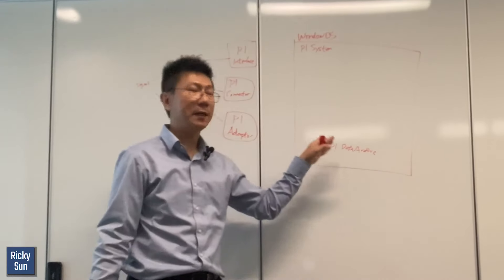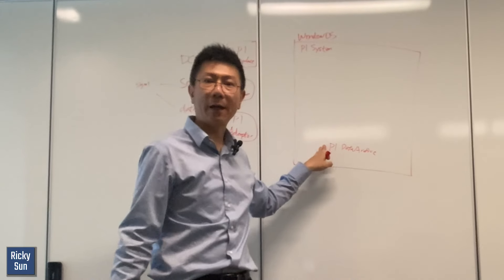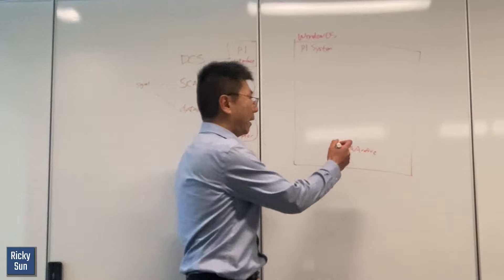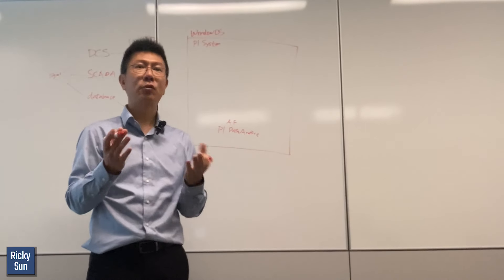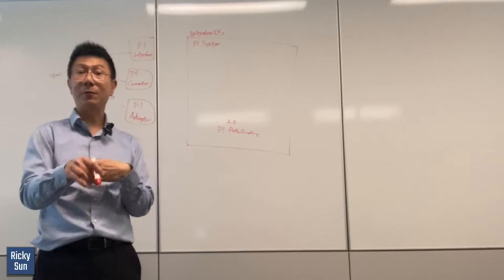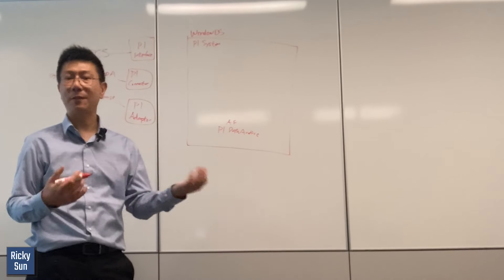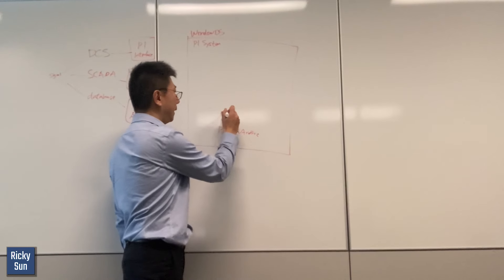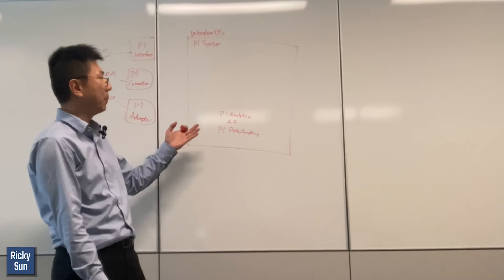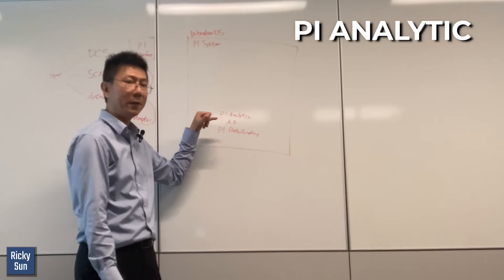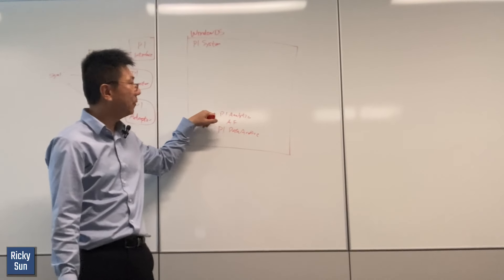The interface, connector, or adapter is responsible for sending the data to the Data Archive — the timestamp and the value. Then we have AF, the Asset Framework. AF lets you structure your data so you can find it more easily. You can create a customizable hierarchy that fits your needs. We also have PI Analytics, which lets you make calculations from the PI AF — you put data in AF and link it to the PI Data Archive to run analytic calculations.